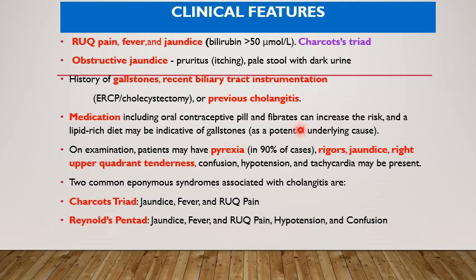Medications including oral contraceptive pills and fibrates can increase the risk, and a lipid-rich diet may be indicative of gallstones as a potential underlying cause. On examination, patients are febrile — pyrexia in over 90% of cases — and this is accompanied with rigors, jaundice, and right upper quadrant tenderness and pain. Patients may be confused, hypotensive, and tachycardic when they are going into the septicemic phase of the infection. The two common eponyms associated with cholangitis are Charcot's triad and Reynolds pentad.